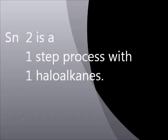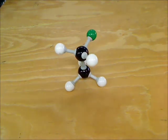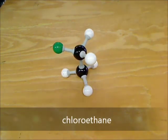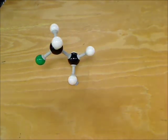SN2 is a one-step process with a primary haloalkane. That doesn't trip off the memory quite so easily. This is chloroethane. It's a primary haloalkane.